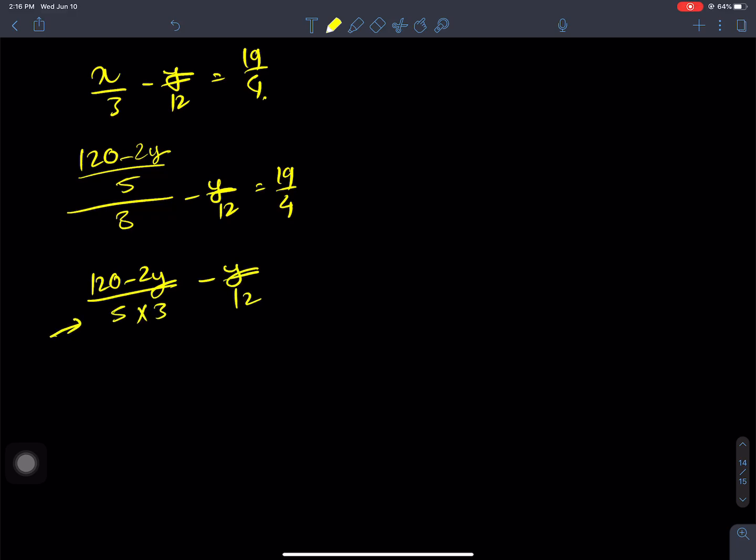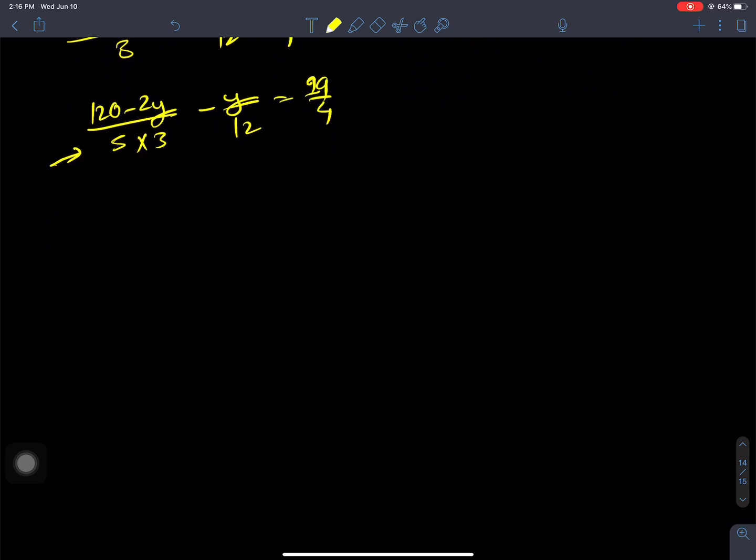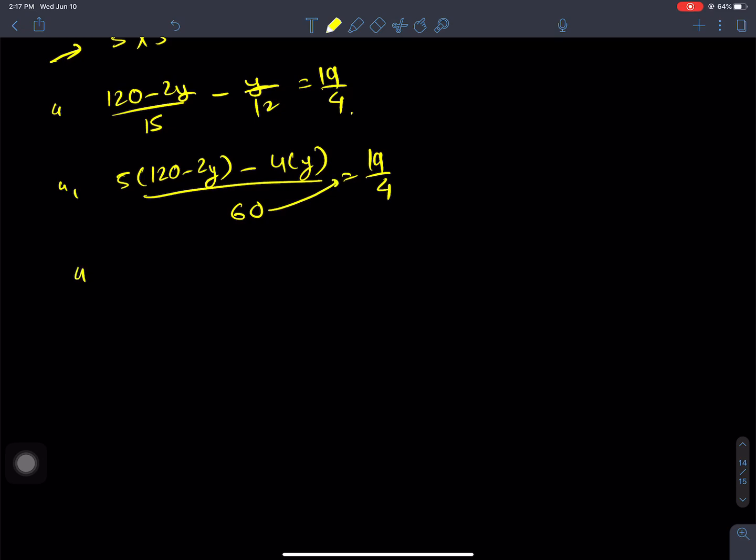The LCM is 30. So (2(120 - 2y) - 15y)/30 = 19/4. This gives us (240 - 4y - 15y)/30 = 19/4, which simplifies to (240 - 19y)/30 = 19/4.